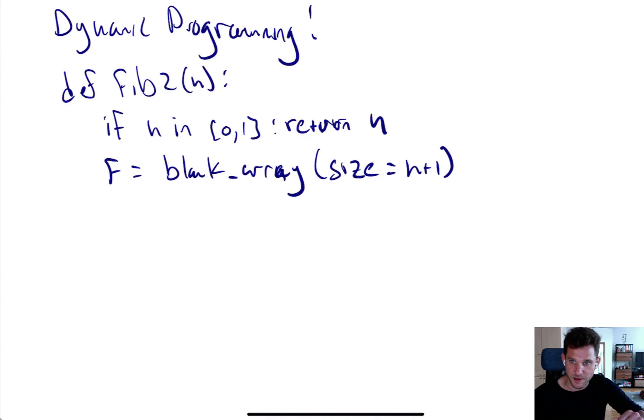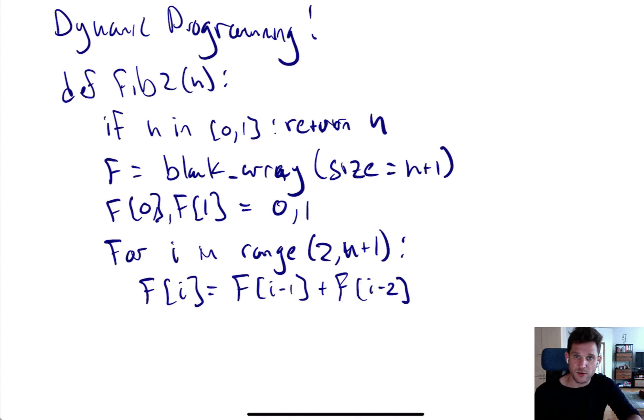Then it's going to create this blank array. This isn't Python code, blank array is not a Python term, but let's just say I can initialize an array of size n+1. So the first thing we do is we initialize the array with the first two Fibonacci numbers, 0 and 1. And the next thing we do is this iterative procedure where we start from i going from 2 to n+1, and we fill in the value of F[i] = F[i-1] + F[i-2].